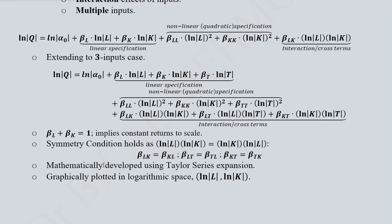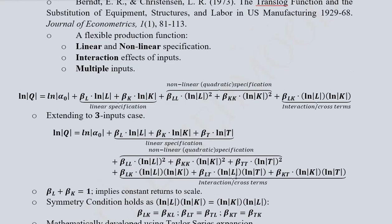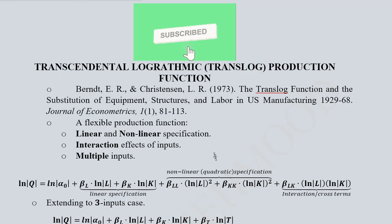Regarding how this production function is mathematically generated, the Taylor series expansion is working in the background. This is a purely mathematical concept and need not be discussed in depth on the economic side. When this function is graphed, it is plotted in logarithmic space because the variables are not in their actual form — they are in their natural logarithmic forms. So instead of labor we write natural log of labor, and instead of capital we write natural log of capital. The translog production function can thus be modeled for two, three, or even more inputs.